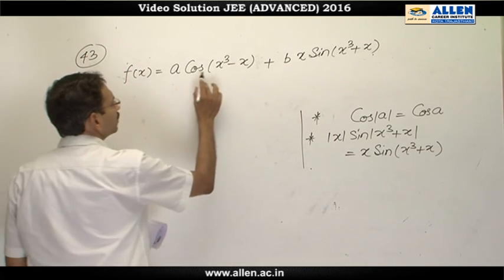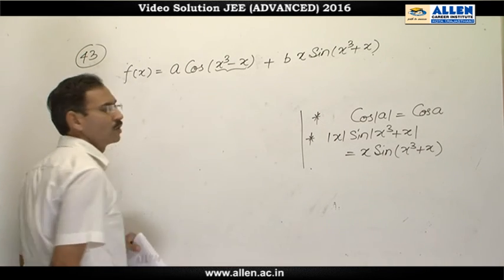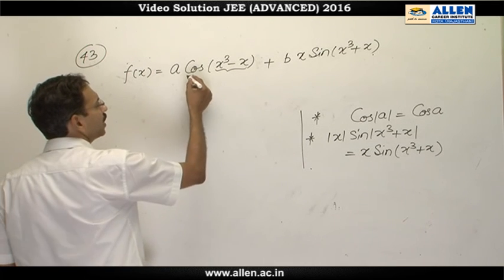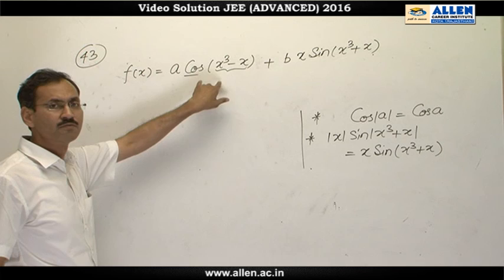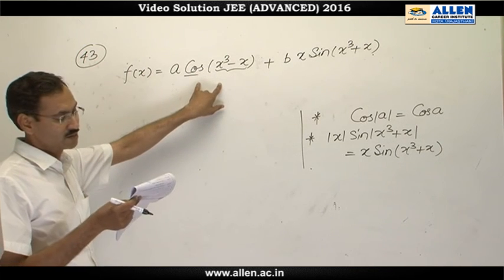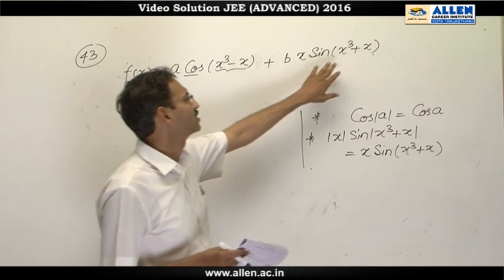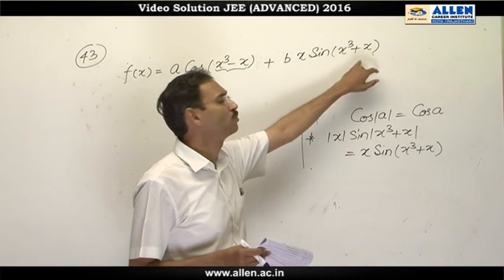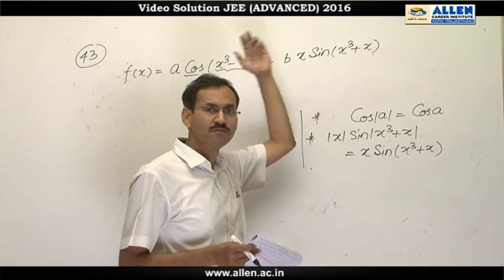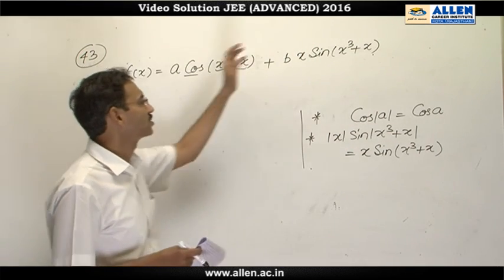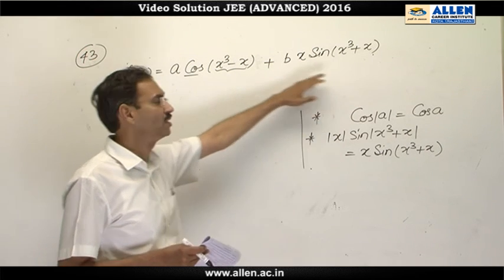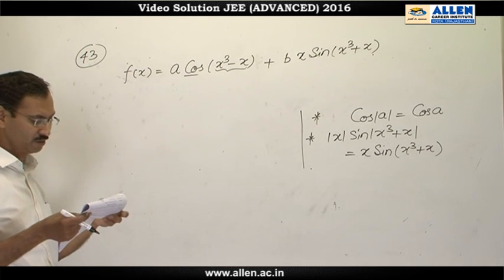Now we know that this is a polynomial, always continuous and differentiable, and this is cos(x), always continuous and differentiable. The composition of two continuous and differentiable functions is continuous and differentiable. The same thing is happening here: sin(x³+x) and x both are continuous and differentiable everywhere. Therefore, the product will be continuous and differentiable, and this is the sum of two continuous and differentiable functions. Therefore, this is everywhere continuous and differentiable.